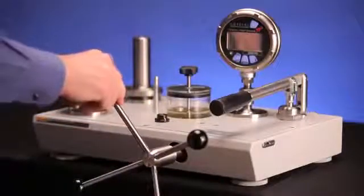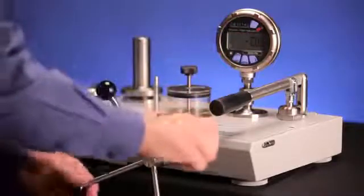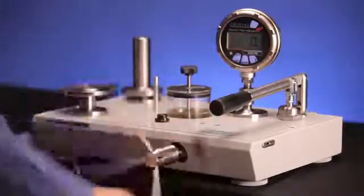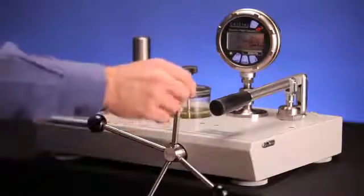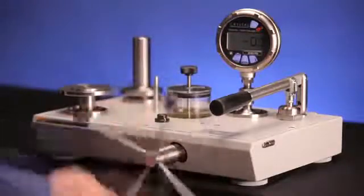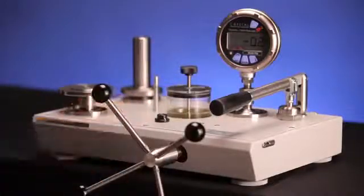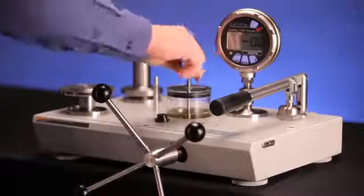Once the variable volume is fully out, open the reservoir valve and turn the variable volume fully in. To finish the process, turn the variable volume fully out with the reservoir valve open. Once it is fully out, close the valve. The tester is now ready for use.